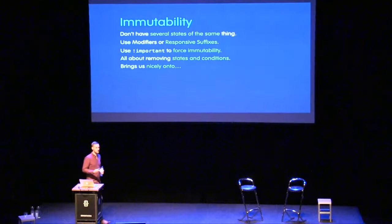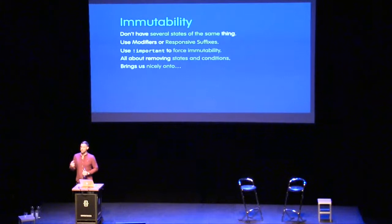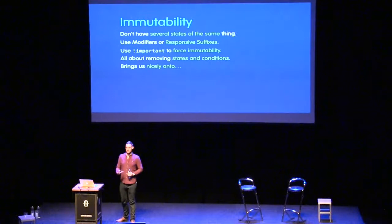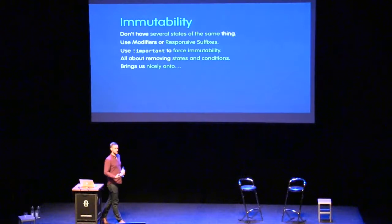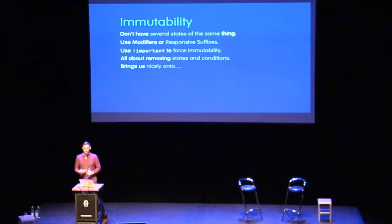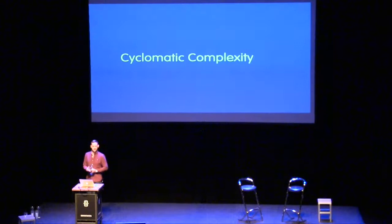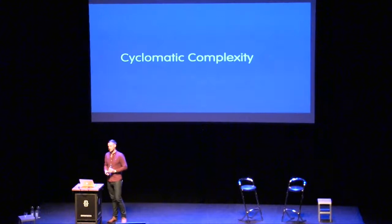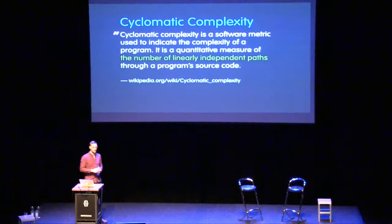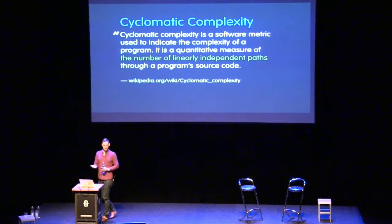To summarize immutability: don't have several states of the same thing. To achieve this, use modifiers in BEM, responsive suffixes across responsive design, and `!important` to force immutability on utility classes. It's about removing states, conditions, and caveats. This brings us to the next topic — cyclomatic complexity. Cyclomatic complexity is a software metric used to indicate the complexity of a program — it's a quantitative measure of the number of linearly independent paths through a program's source code.